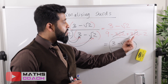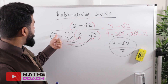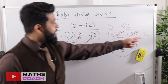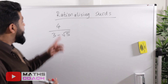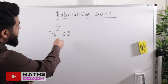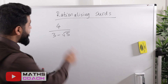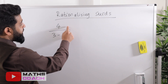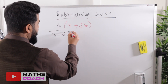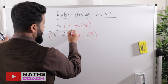In the future, you can use the shortcut: the middle two terms will always cancel, so just compute the first term squared minus the last term squared — i.e., 3² − (√2)² = 9 − 2 = 7. Now let's do 4/(3 − √5). We multiply top and bottom by the conjugate 3 + √5.